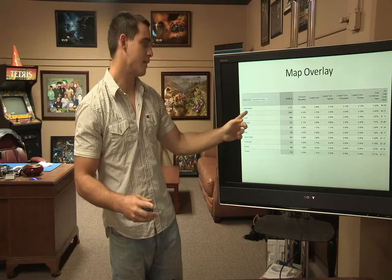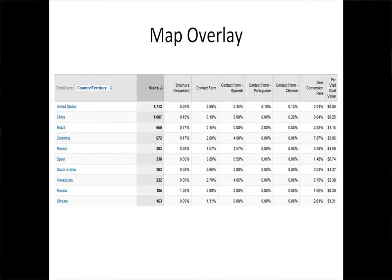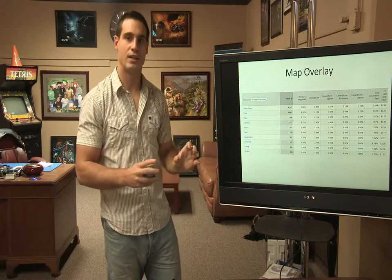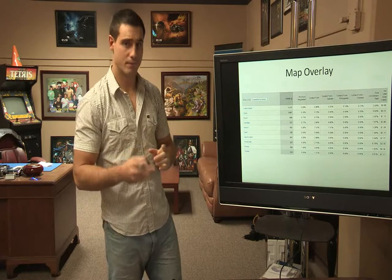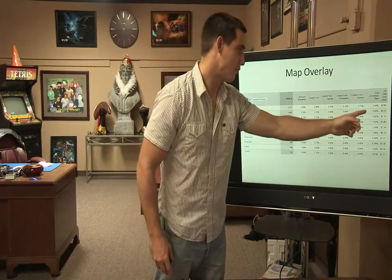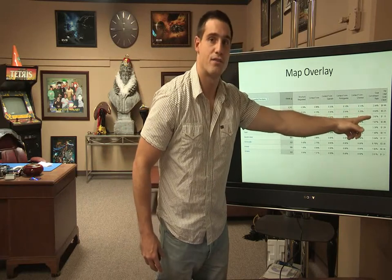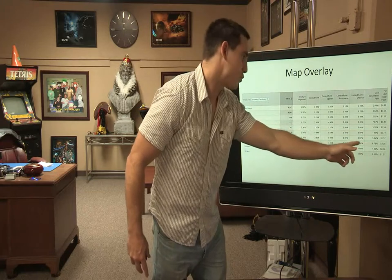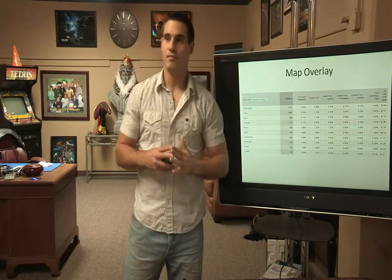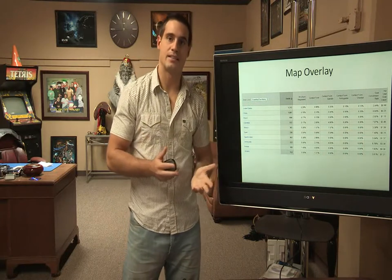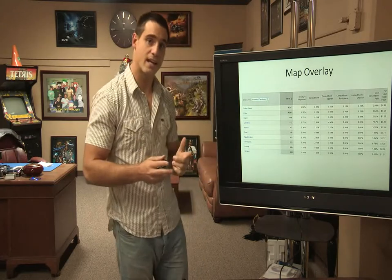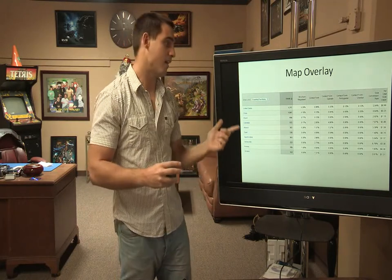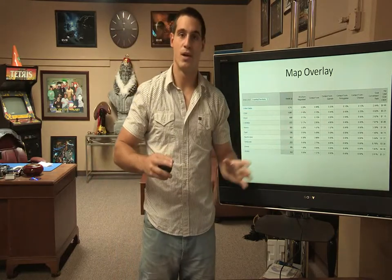For example, the United States got 1,700 visitors, China got 1,000, and Brazil got 650. Not only can you see how many visitors you get from each country, but you can also see the conversion rate. The conversion rate for China is only 0.64%, whereas the conversion rate for Colombia is almost 8% and for Venezuela almost 7%. So it makes a lot of sense to create specific landing pages for countries like Colombia and Venezuela, while not focusing so much on China due to its very low conversion rate.